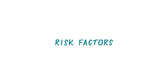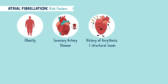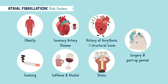AFib can be caused by many factors, but it's most commonly seen with a background of obesity, coronary artery disease, history of cardiac arrhythmias or an underlying structural problem with the heart, smoking, increased alcohol or caffeine intake, and stress. The onset of rapid AFib can also be seen after surgery, because the body has been through anesthesia and is trying to adapt back. So in a post-operative setting, always be on the lookout for cardiac arrhythmias like AFib.